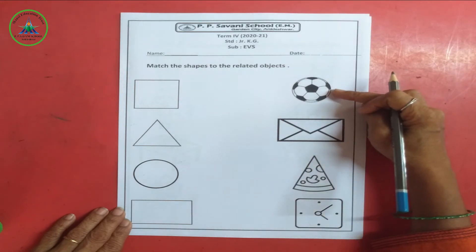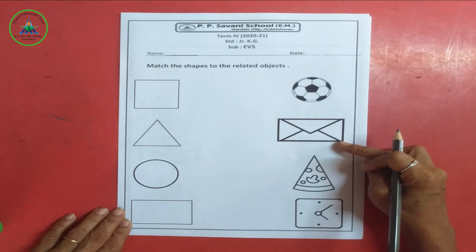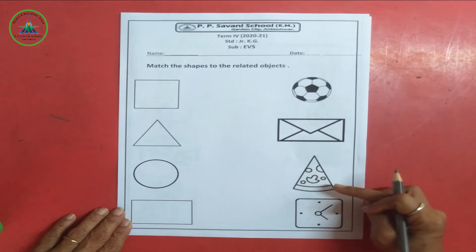So look at it. This is a ball. This is a circle. This is a handball. That's it. This is a piece of triangle. And this one is a clock.